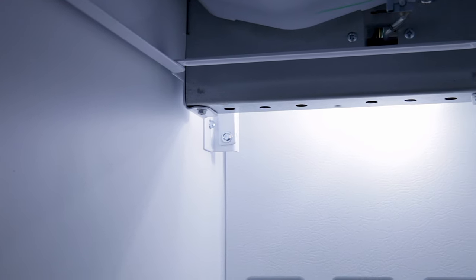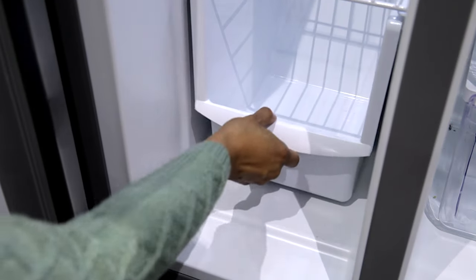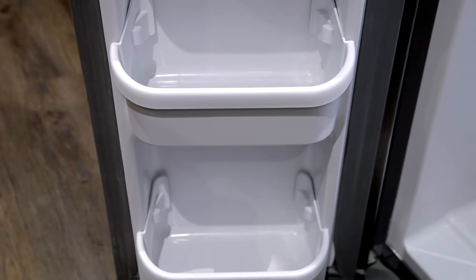In the freezer is LED lighting, the ice maker, ice storage, three metal shelves, one pull-out storage basket, and four removable bins on the door.